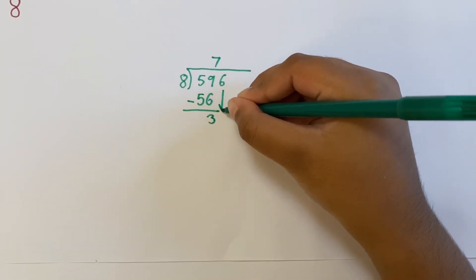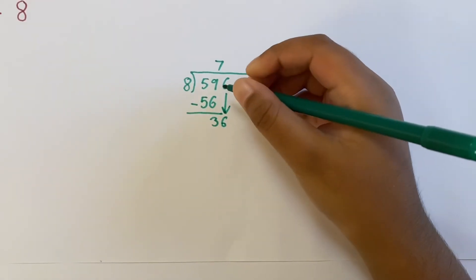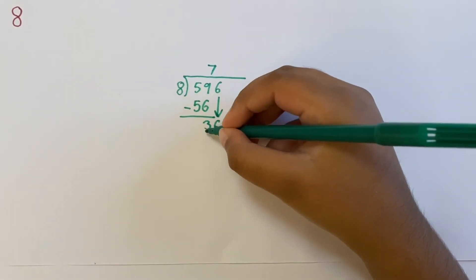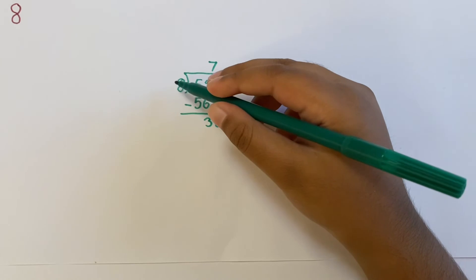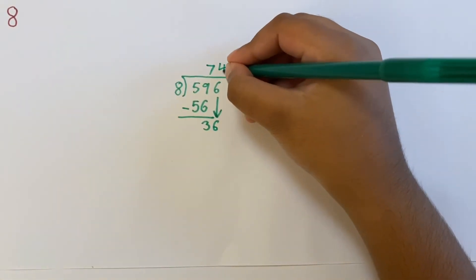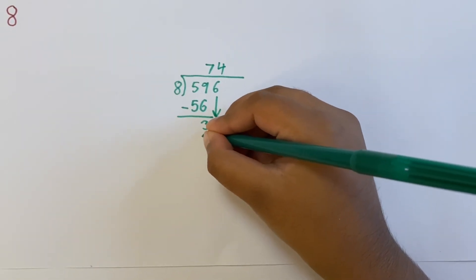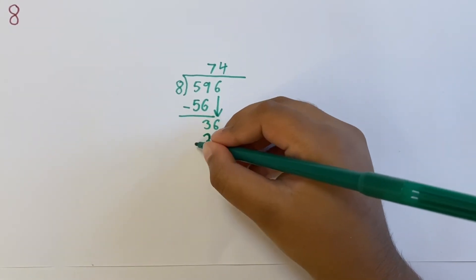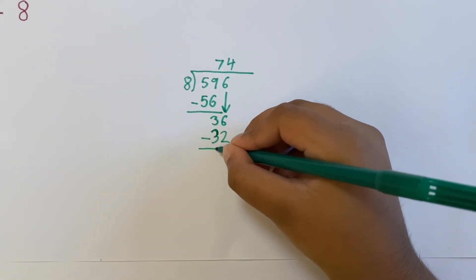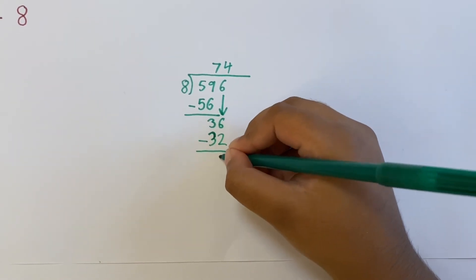Now, we bring down the 6 to make the remainder of 36. 8 times 4 is 32. 36 subtract 32 is 4.